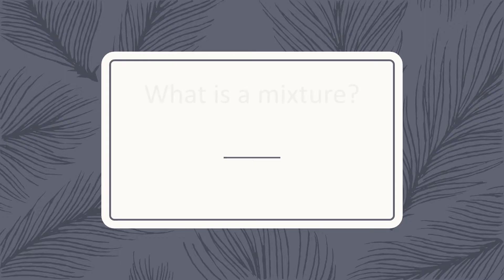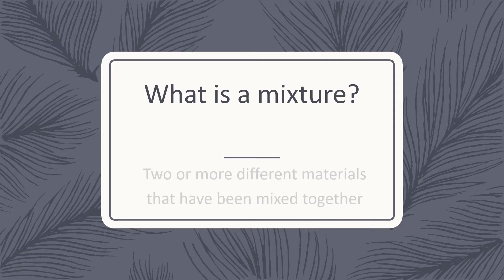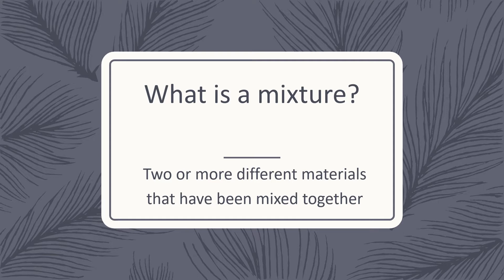First we need to answer the question: what is a mixture? A mixture is any two or more substances mixed together. It can be in any state — it can therefore be solids, liquids, or gases. It can also be a combination of states. The substances do not react with each other chemically, and the substances can be mixed in any ratio.